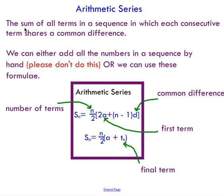So an arithmetic series, the sum of all terms in a sequence in which each consecutive term shares a common difference, just like an arithmetic sequence, except we're adding all of these terms together. So to find the sum of a series, we can either add all of the numbers in a sequence by hand and I've put please don't do this because this is messy and takes forever, or we could use these formulae.